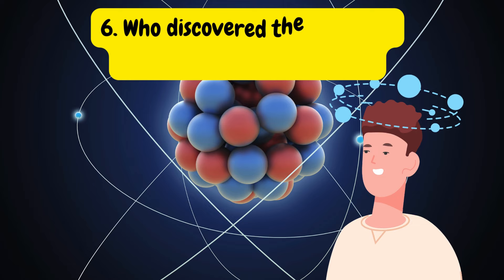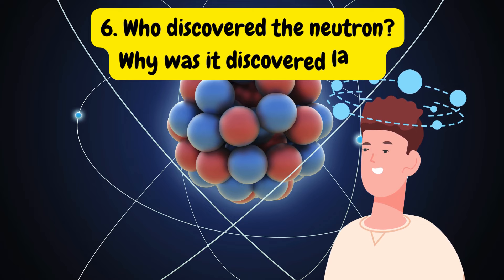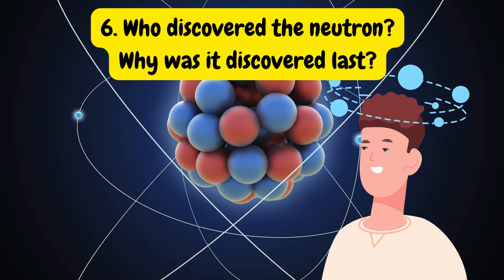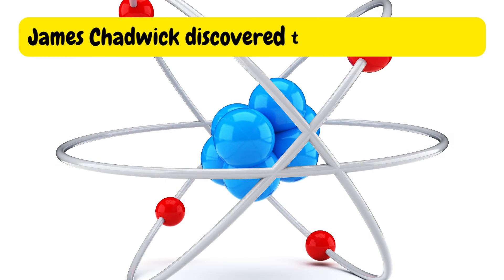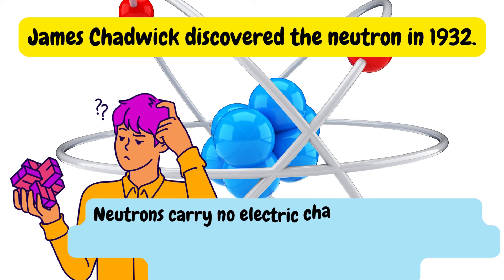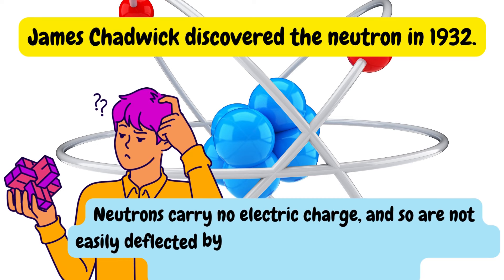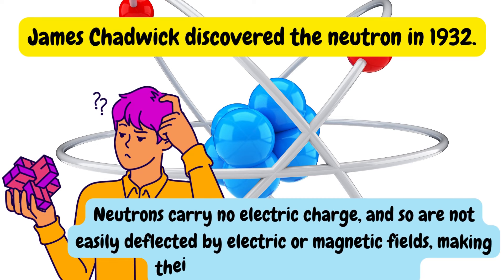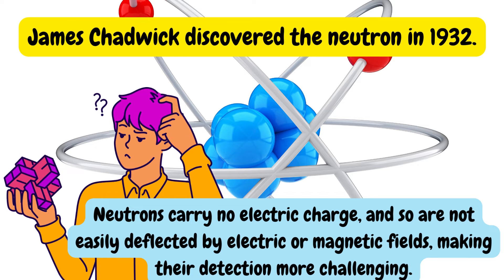Question six: Who discovered the neutron and why was it discovered last? James Chadwick discovered the neutron in 1932. Neutrons carry no electric charge and so are not easily deflected by electric or magnetic fields, making their detection more challenging.